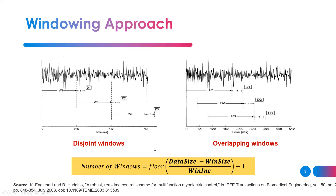The number of windows to be analyzed is given by the equation: (data size minus window size) divided by the window increment, plus one. You can read more about these two versions and which is more suitable for real-time analysis in a paper considered a golden reference in the EMG pattern recognition field.